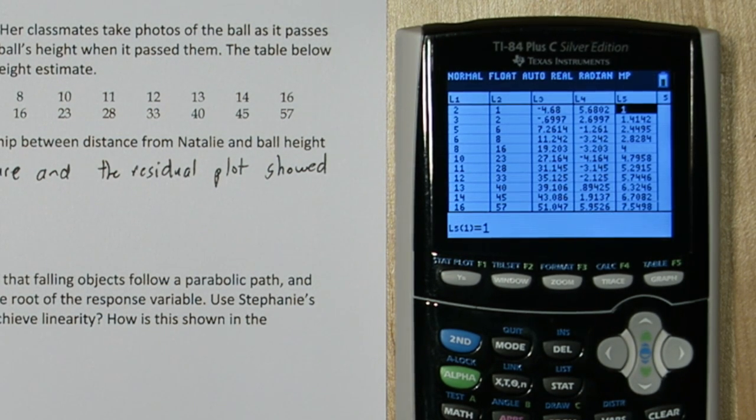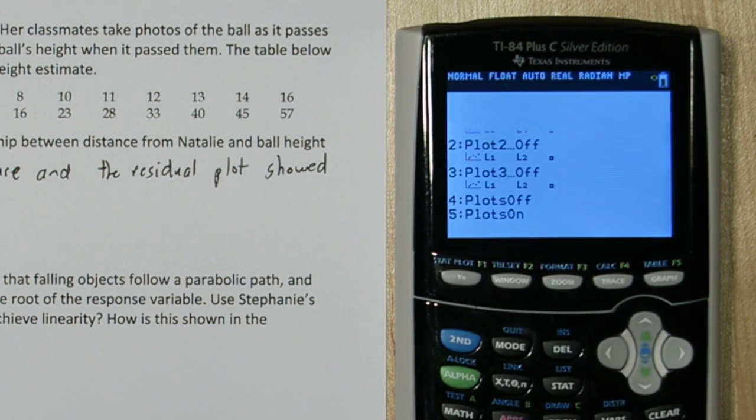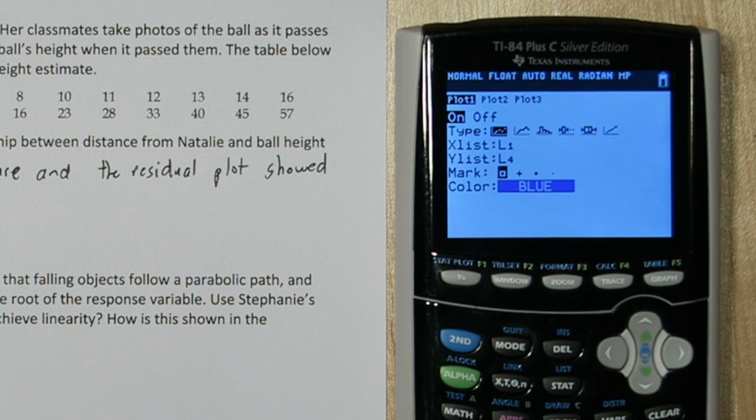Let's make a new scatter plot with this transformed variable. If I press 2nd and y equals, I'm going to make a scatter plot with our original explanatory variable in list 1, and our response variable is going to be in list 5, our transformed response variable.